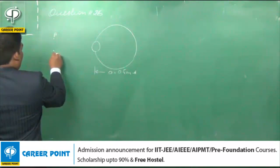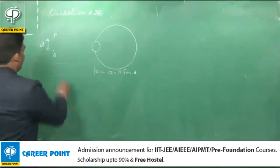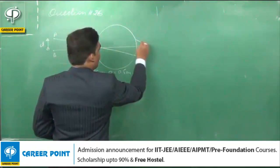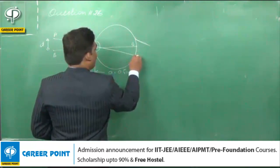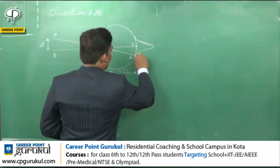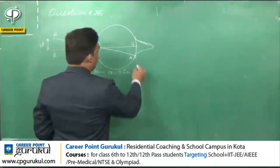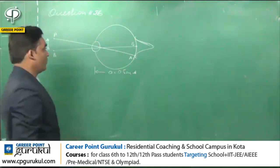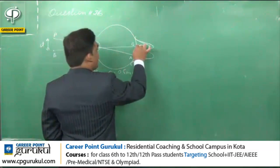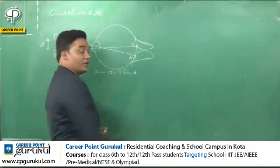Let A and B be two points which have to be resolved, and the distance between them is D. This is the central maxima of point B and this is the central maxima of point A. To resolve them, it is necessary that the first minima of B forms at the central maxima of A, and similarly the first minima of A forms at the central maxima of B. This is the required condition.